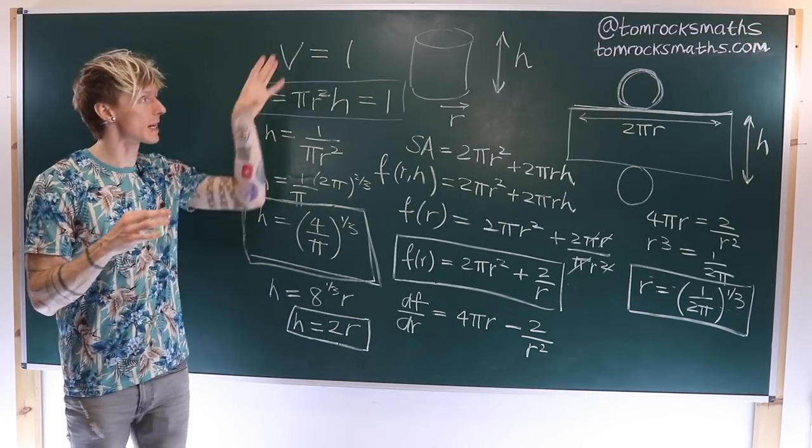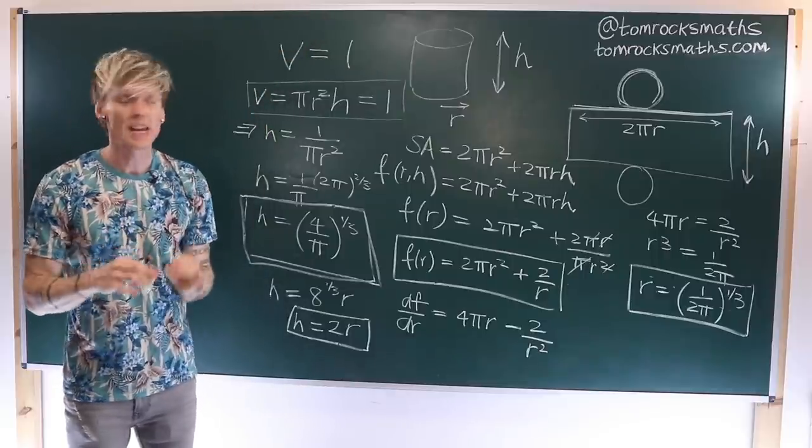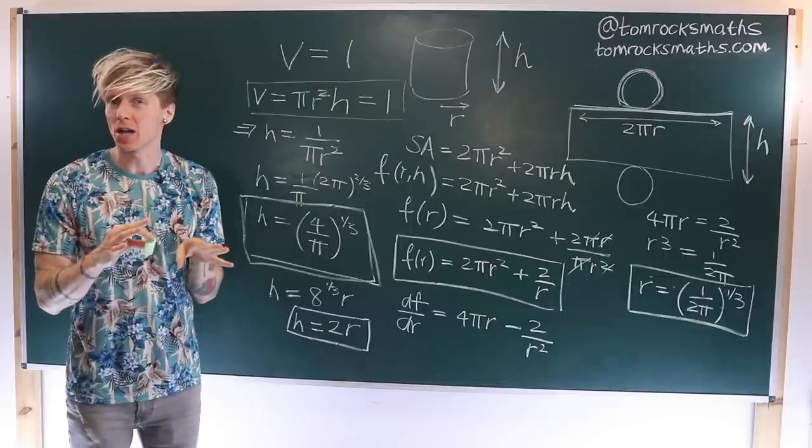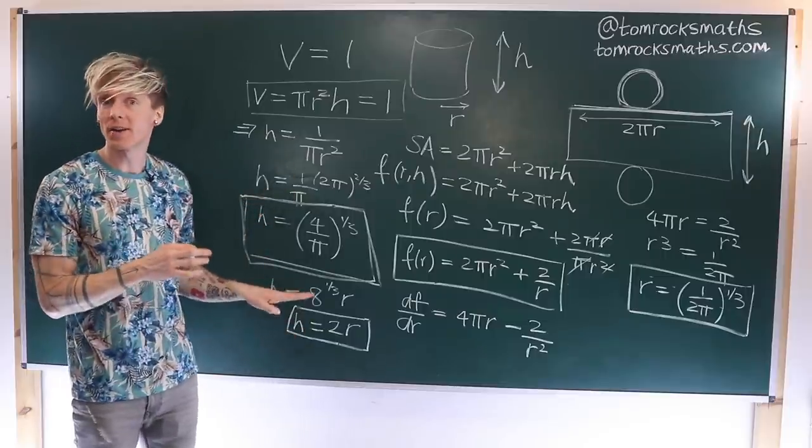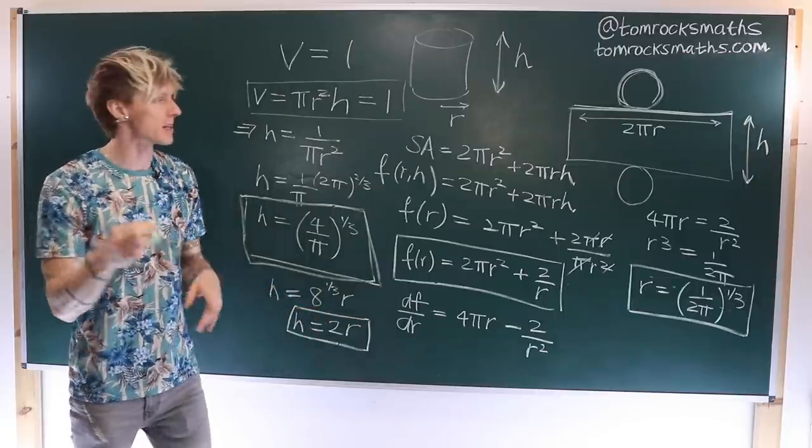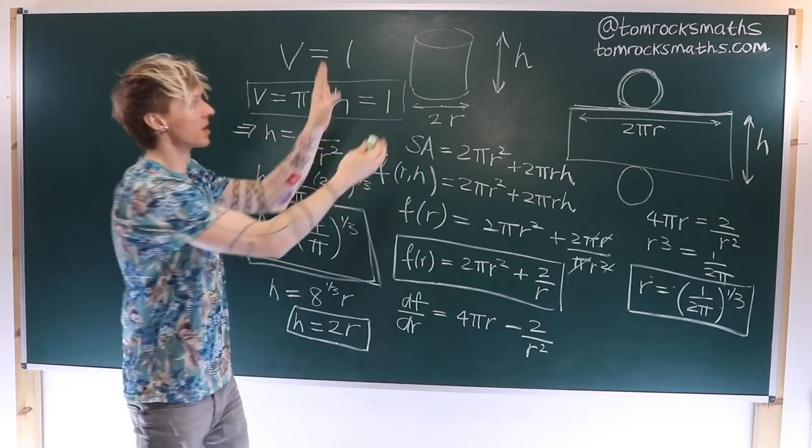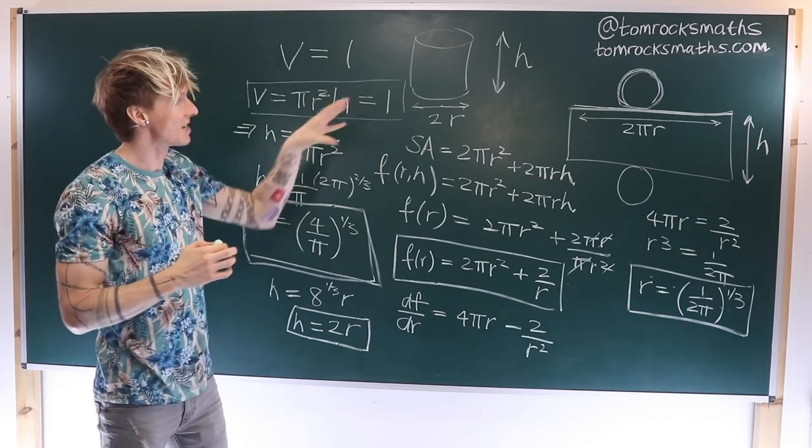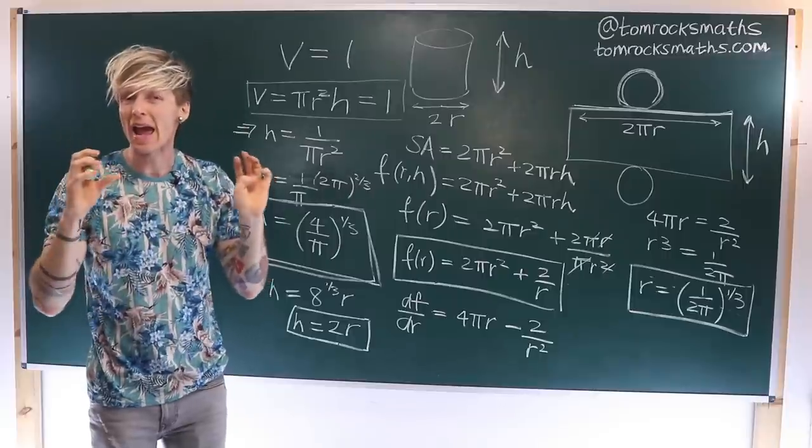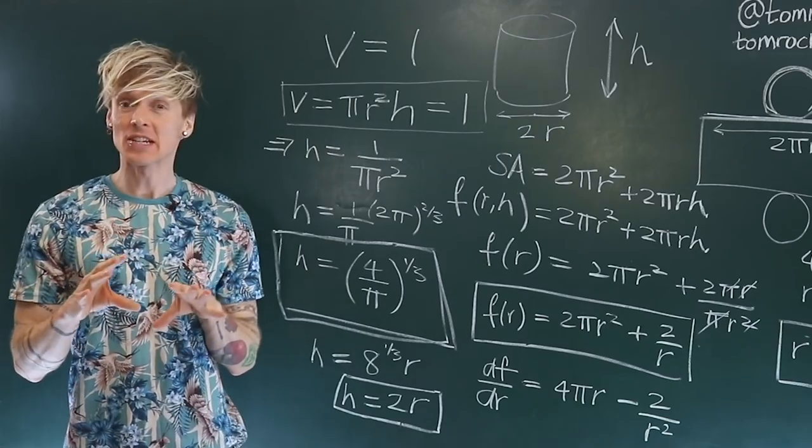So in summary, for a cylindrical tin of a fixed volume of one unit, in order to minimize the surface area and therefore reduce production costs, we actually want the height of our tin to be equal to twice the radius. Now twice the radius is of course equal to the diameter of our cylindrical tin, and so therefore if these two are equal, the cylindrical tin is as square as possible in order to minimize production costs.